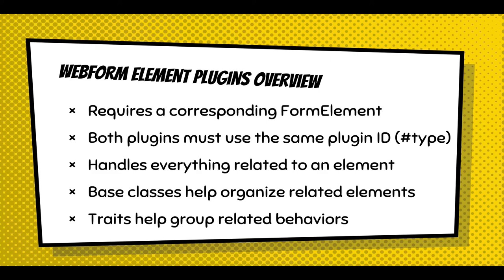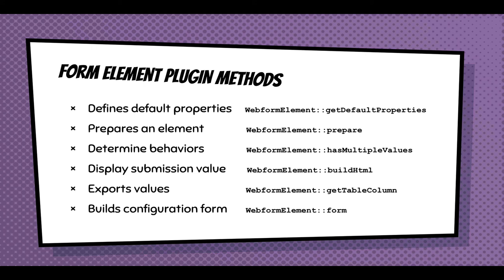An example of a trait is the entity reference trait — for varying types of entity references: select, radios, checkboxes, autocompletes — we isolate that code into a trait to reuse it. Webform elements have similar but more advanced properties than form elements: what are the default properties; how to prepare and render them; behaviors like whether the plugin supports multiple values. Once data comes in, we need to display it in reports and emails — so there are `buildHtml` and `buildText` methods. When exporting data there are export methods: get the table column name. And since there's a UI, there are `buildConfigurationForm` methods.